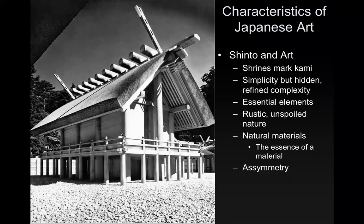In Shinto and art, shrines sometimes mark particular kami. We'll look at the Grand Shrine of Ise, pictured here, a little later on — it shows the concept of simplicity with hidden refined complexity. The building is in a very old style but made in a refined way, remade again and again over thousands of years, like a fine piece of handmade furniture.